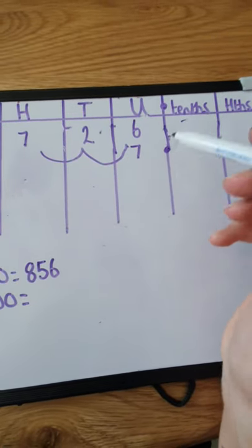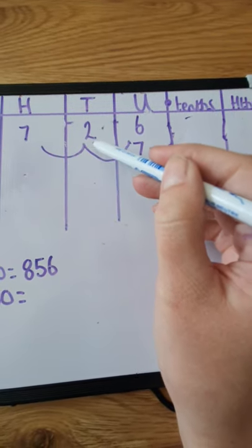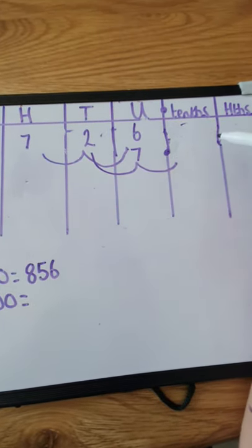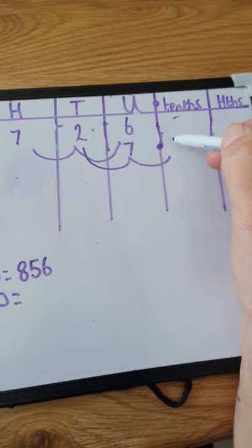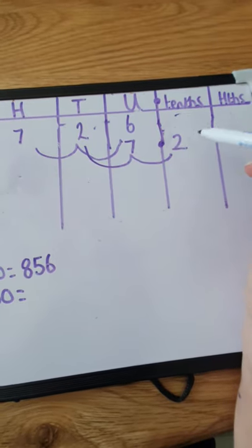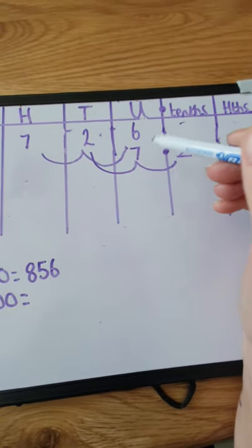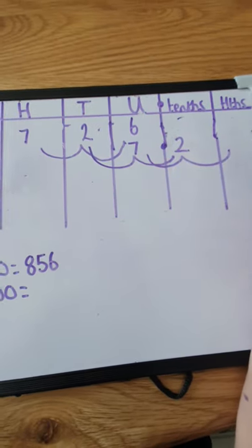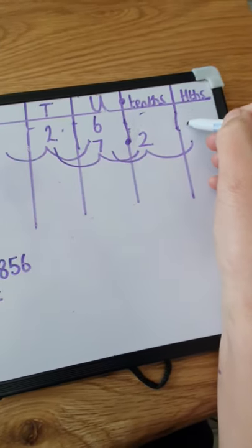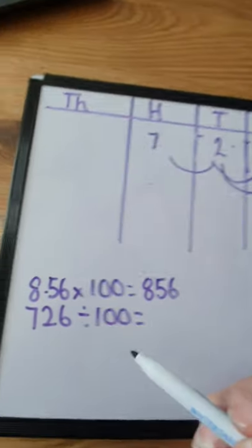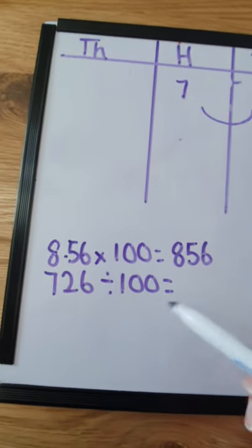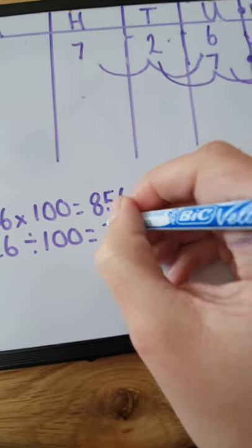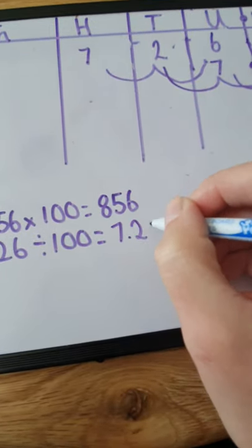We know we're going to have a decimal number. So we're going to move our 2 down in value — 1, 2 — and our 2 now becomes 2 tenths. We're going to do the same to our 6 units: it goes down in value by 2 places and becomes 6 hundredths. So 726 divided by 100 equals 7.26.